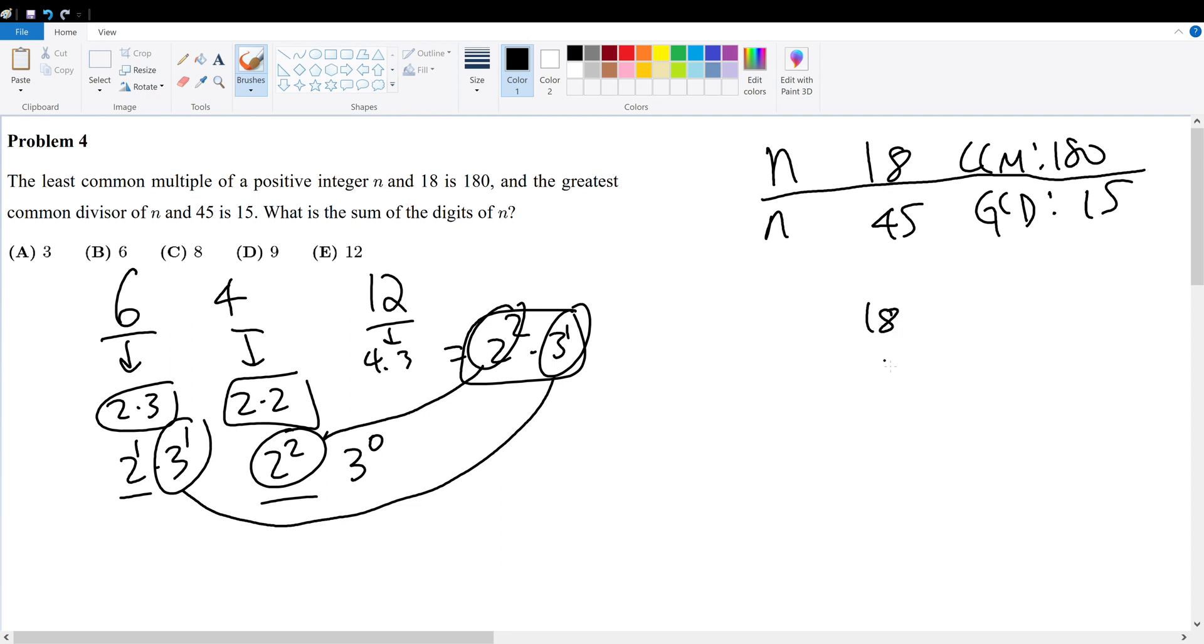18 is 9 times 2, which is 3 squared times 2. The LCM of 180 is just 18 times 10. 10 gives another 2 times 5, so that's 3 squared times 2 squared times 5. But what is n?